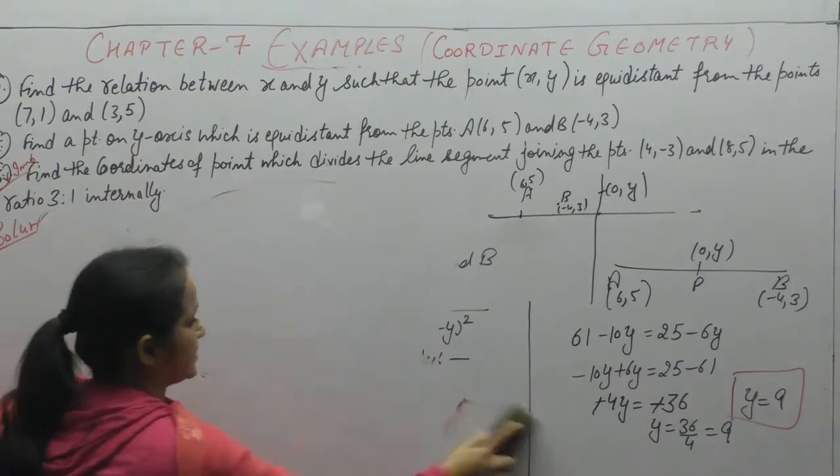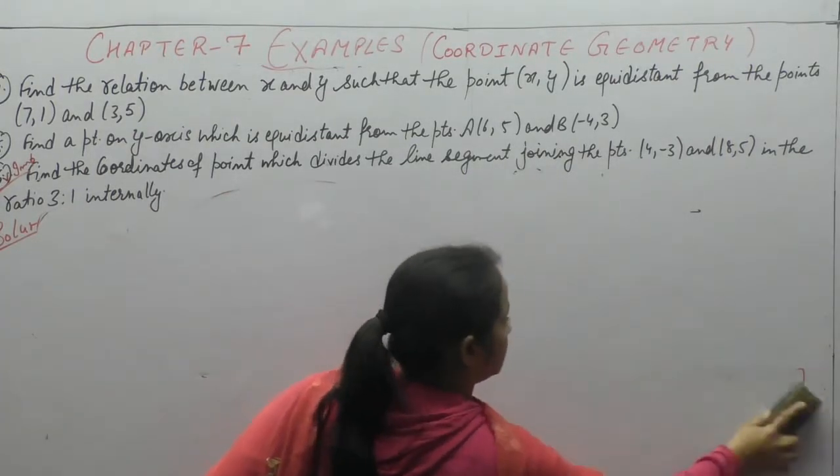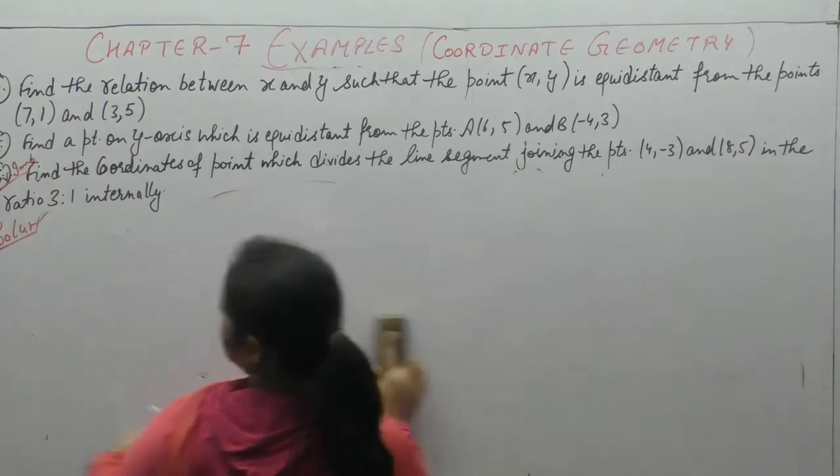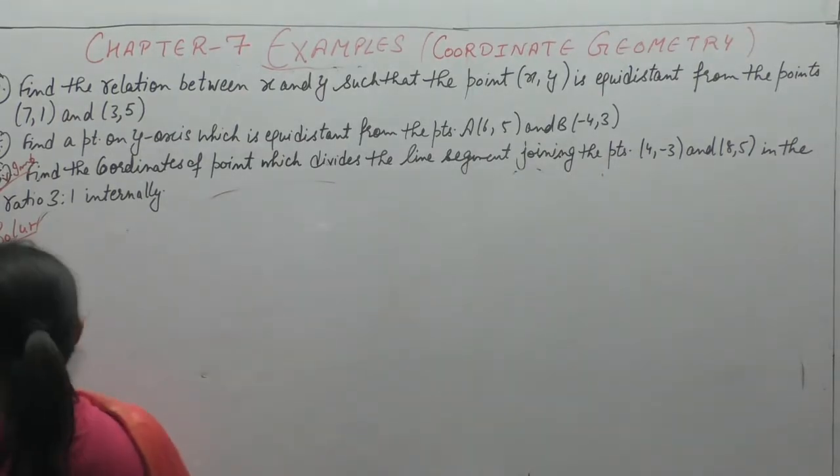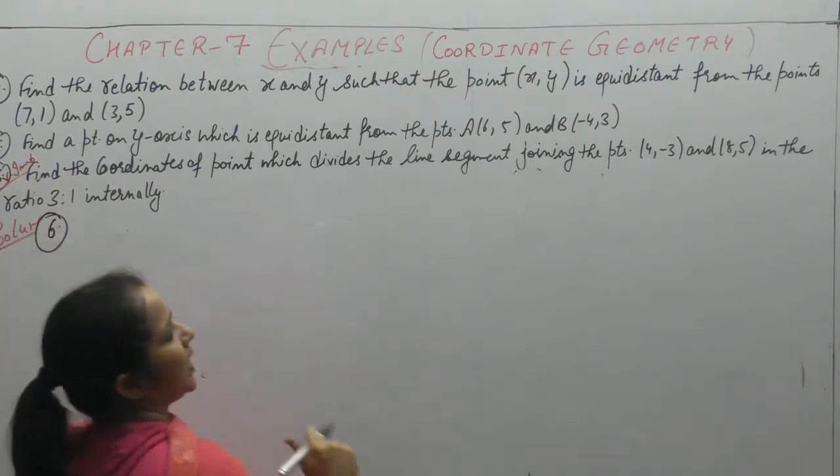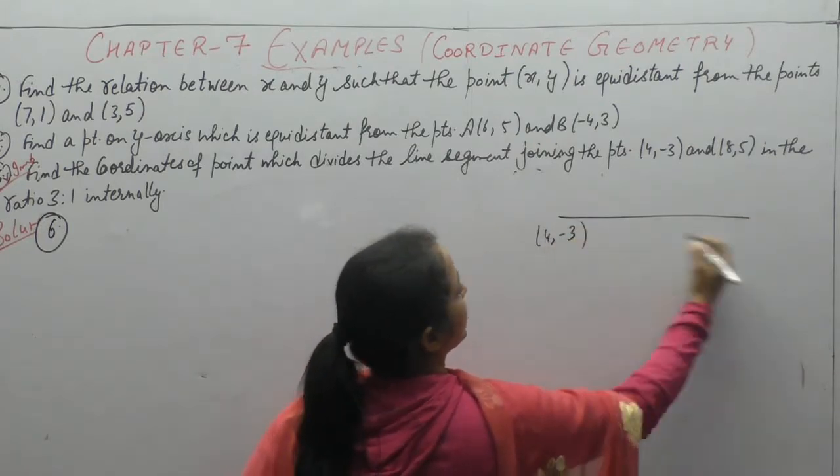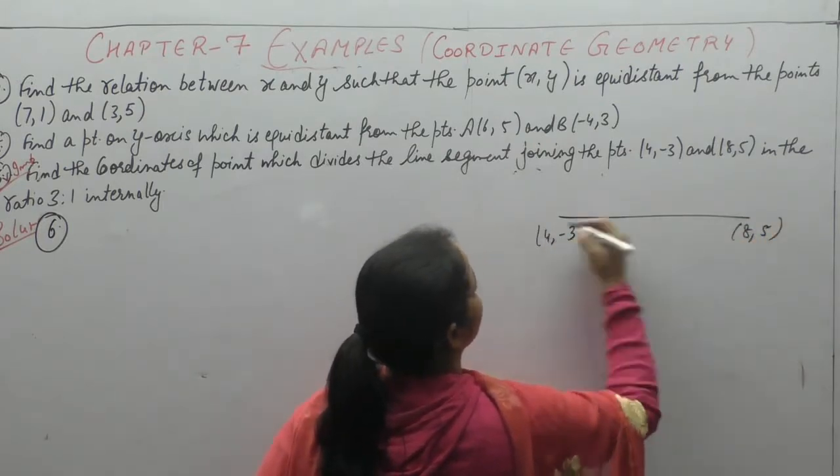Now next is question number 6. Find the coordinates of point which divides the line segment joining the points (4,-3) and (8,5).